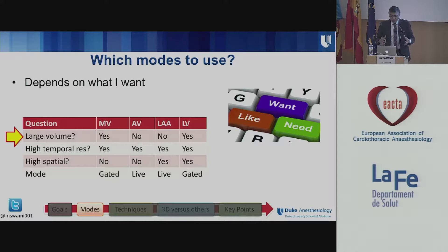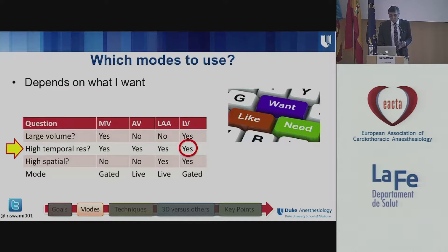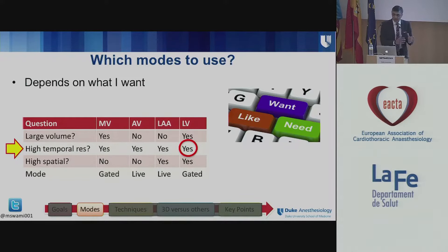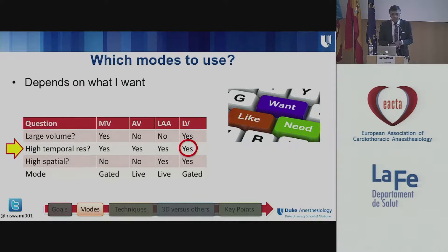The question is: which structure am I looking at? If I focus on the left ventricle — which is what this talk is all about — it is a large volume, so yes, I need a large acquisition volume. Do I want high temporal resolution? Yes, because when I want to track volumes I need to assess end-systolic and end-diastolic volumes in three dimensions, and those two volumes will give me my ejection fraction. The end-diastolic volume will also tell me about diastolic function.